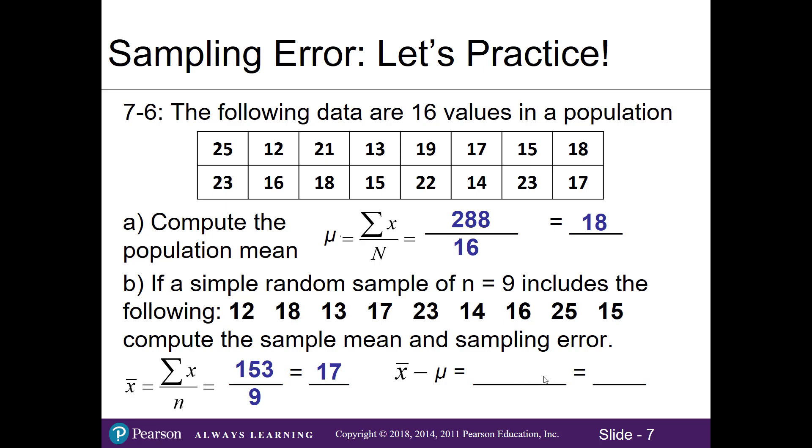Now for the sampling error it's very important that we remember the order. Sample mean always comes first and then we subtract the population mean because we're comparing the sample mean against the population mean. So I'll take 17 − 18, and therefore our sampling error for this particular sample is negative 1.